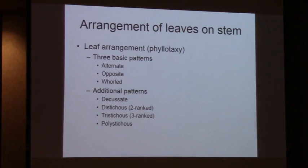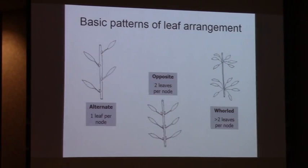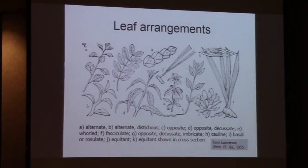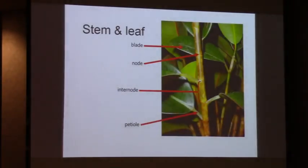The arrangement of leaves on the stem is known technically as phyllotaxy. There are three basic patterns: alternate, opposite, and whorled. When you're using a dichotomous key in a floristic manual, you'll need to identify the pattern of leaf arrangement. Alternate leaf arrangement has one leaf per node; note the axillary lateral bud above each node. Opposite leaf arrangement has two leaves per node. Whorled has three or more per node. The petiole of the leaf connects it at the node, and this is the base of the blade.